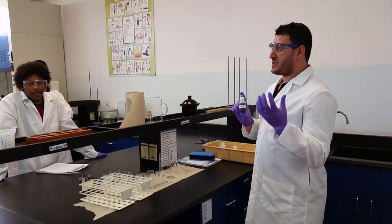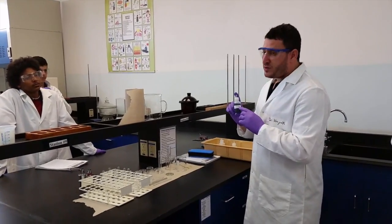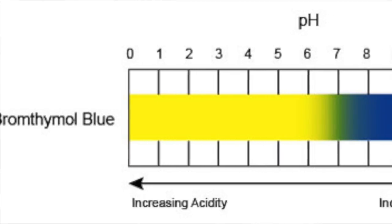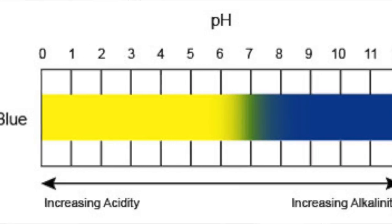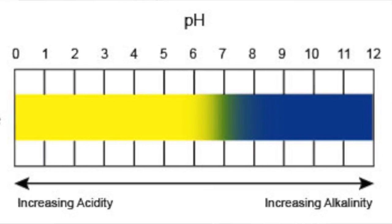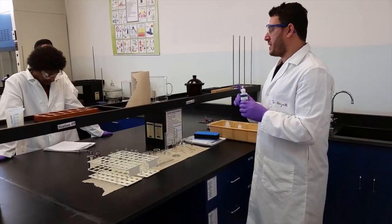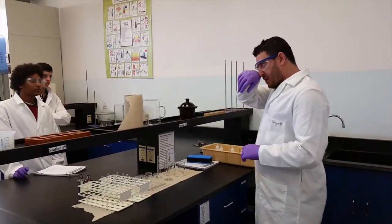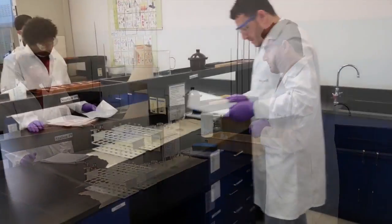Phenolphthalein goes from colorless to pink — colorless in acidic medium, pink in basic medium. Bromothymol blue goes from yellow, to green, and then blue; it doesn't go colorless. So yellow in acidic medium, yellow-greenish in neutral medium, and blue in basic medium. You will have three solutions: one acidic, one basic, one neutral.